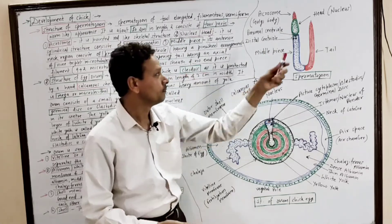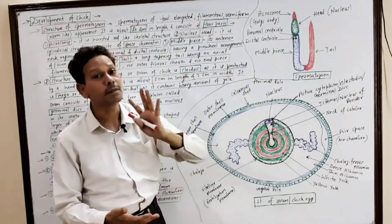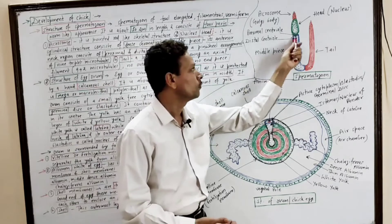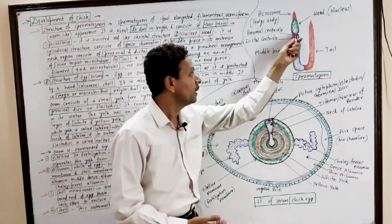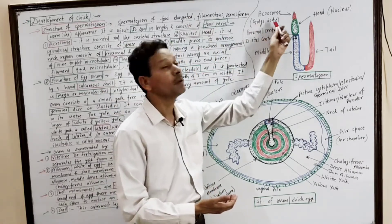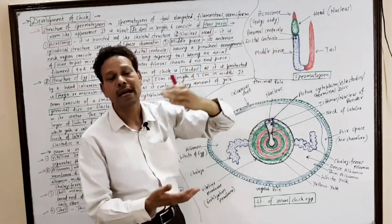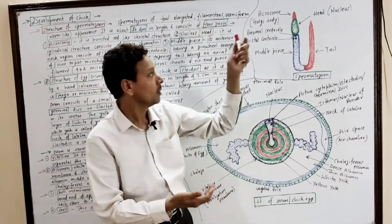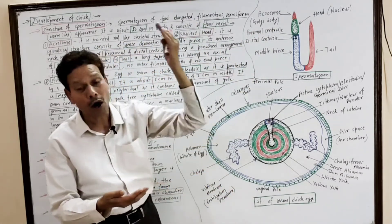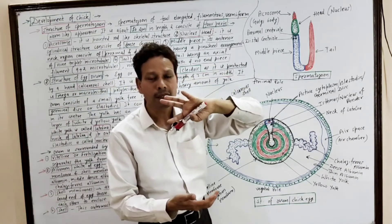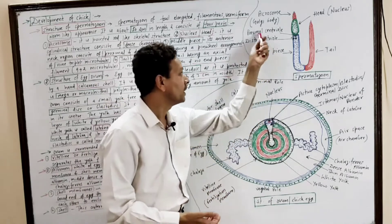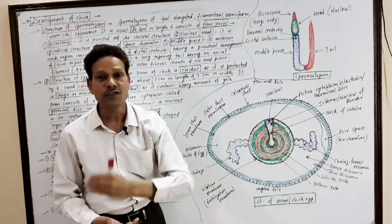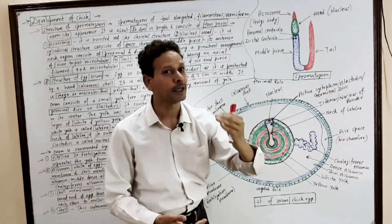The middle part is known as the powerhouse, or middle piece. Its anterior part is the neck region, and in that region there are two centrioles. The first centriole is the proximal centriole and the lower one is the distal centriole. The proximal centriole is involved in cleavage divisions — in the divisions of the zygote. The distal centriole is involved in the formation of the flagellum axial filament, having a nine-plus-two arrangement of microtubules.